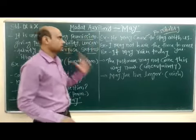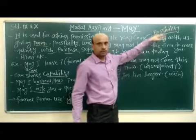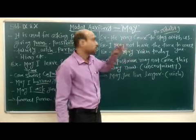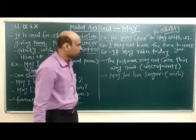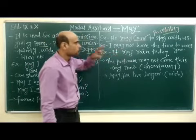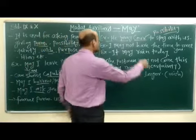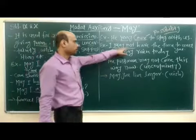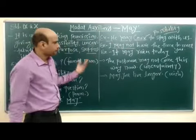'He may come to stay with us' — what does it show? It shows possibility. We don't know; there are only a few chances. So 'may' plus the first form of the main verb shows possibility. One more example: 'I may not have the time to meet you.' In the negative, we use 'may not.' This also shows possibility.